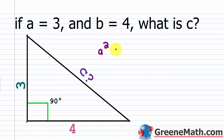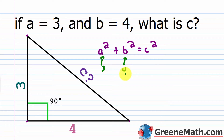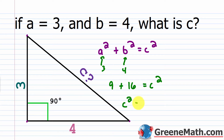Plugging into the Pythagorean formula: a squared plus b squared equals c squared. So 3 squared is 9, plus 4 squared is 16, equals c squared. Flipping it around: c squared equals 9 plus 16, which is 25.